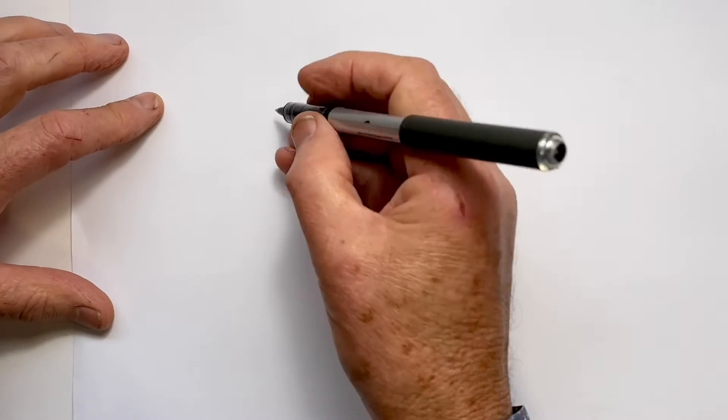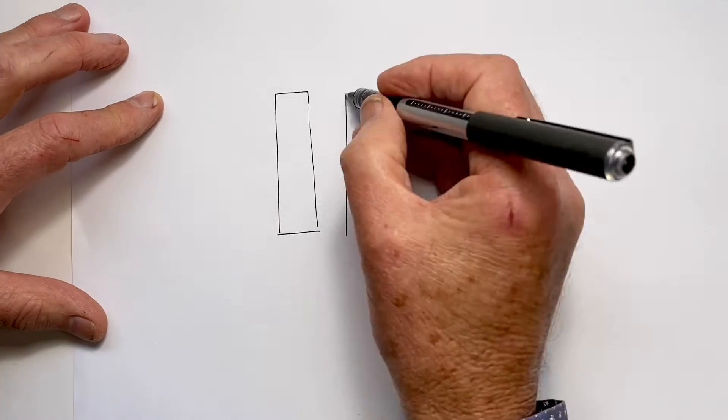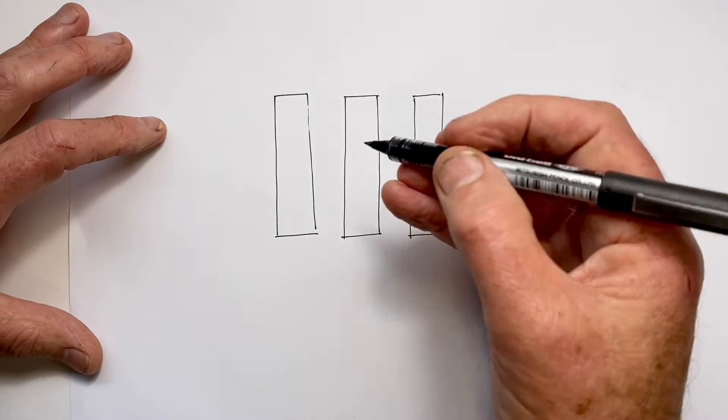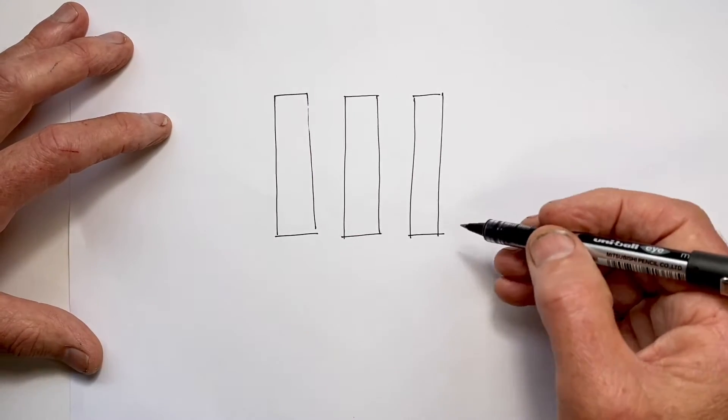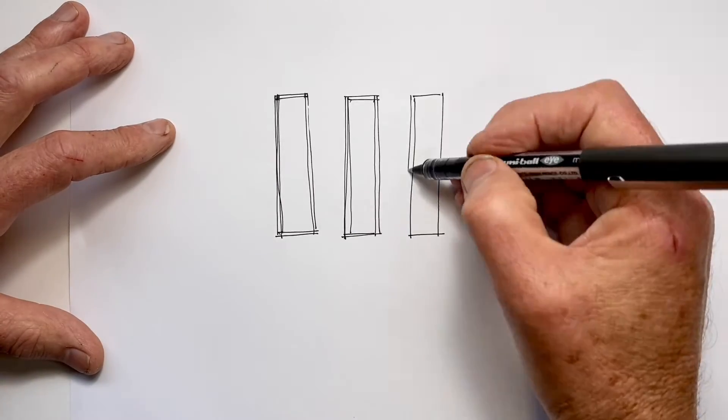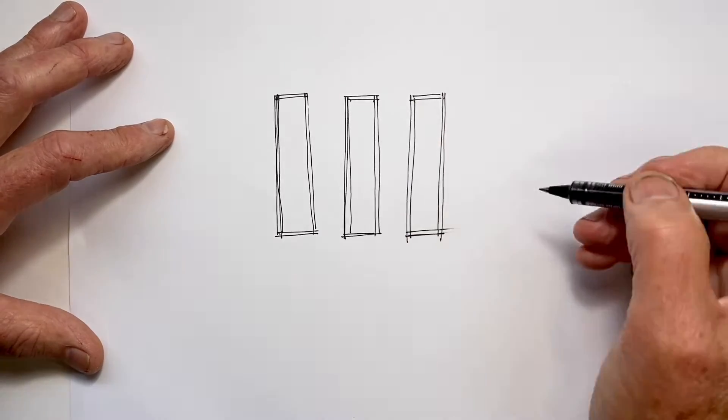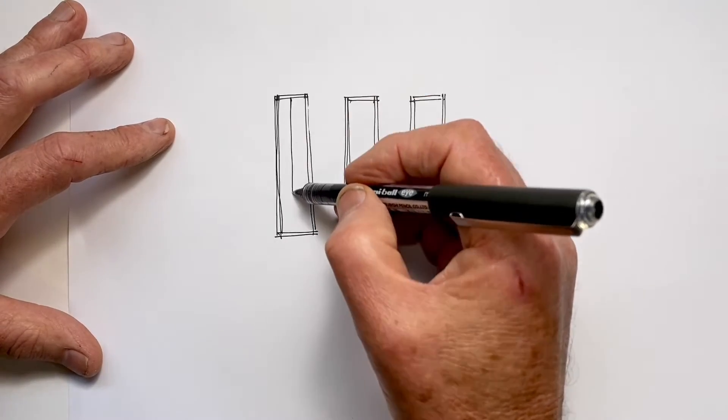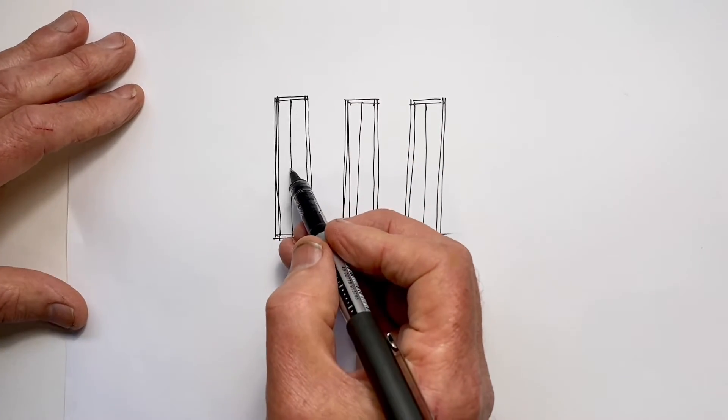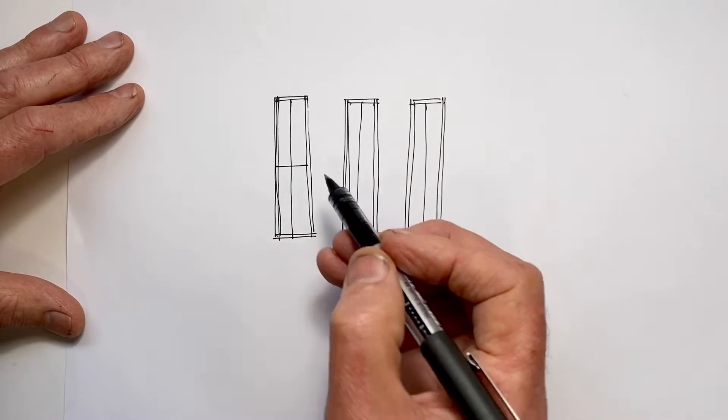For this exercise, we draw a series of long rectangles. And then we draw a second set of lines to increase the thickness of the outside edge. Now you can see how I use that to improve the proportions. We do a vertical line down the middle. Now this first one, we want to divide this rectangle in half.